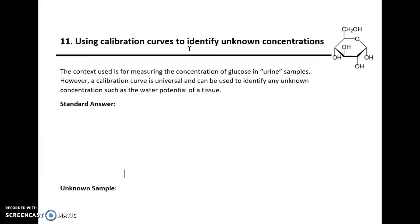Hello and welcome to TeachingBios. Here we're going to look at the 11th required practical for AQA A-level biology, and that is the use of calibration curves to identify unknown concentrations. So the context that is given in the AQA specification is for the determination of the concentration of glucose in urine samples.